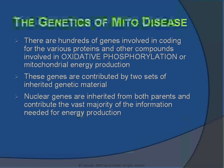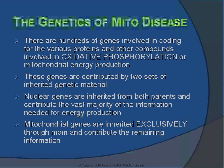The inheritance patterns of mitochondrial disease are quite complicated. There are hundreds of genes that come together to form many different compounds involved in mitochondrial energy production, or oxidative phosphorylation. These genes are inherited by two sets of inherited genetic material. The first are the nuclear genes, which are inherited through both parents and contribute the vast majority of the information needed for energy production. Mitochondrial genes, on the other hand, are inherited exclusively through our mothers and contribute the remaining information.